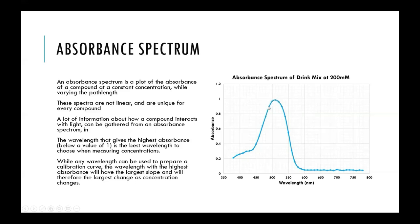Typically, the wavelength that has the highest absorbance reading — the maximum wavelength — is used to prepare calibration graphs, because at this wavelength a small change in concentration will give a larger change in the overall absorbance. This is the full range that it can do, so it's more easily seen and detected.